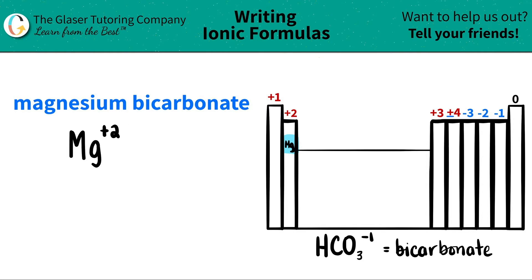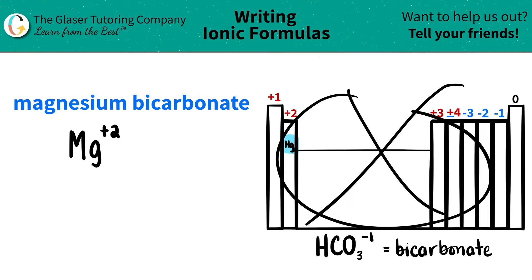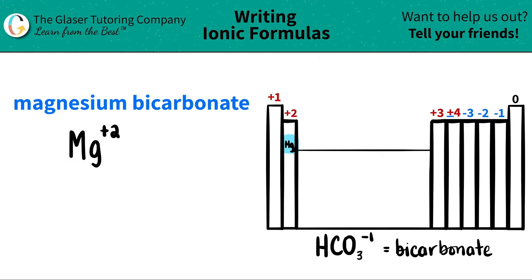Now I work on the next part. I see that I have bicarbonate, but it's an ATE ending, and all ATE endings are always polyatomic ions — they're never going to be found on the periodic table. You have to memorize them. So for the case of this video, I wrote down what bicarbonate is. Use flashcards, write it out, do whatever you have to do to memorize that bicarbonate is always HCO3 with a negative one charge.